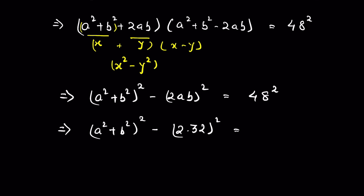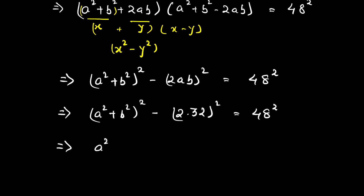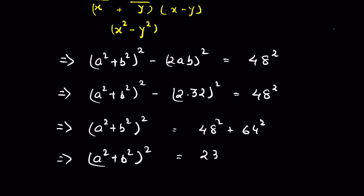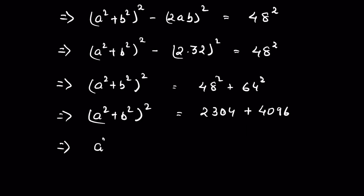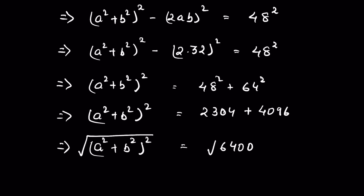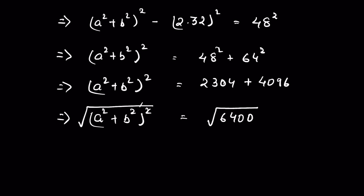From equation 4, ab equals 32, so 2ab equals 64. Substituting: (a²+b²)² minus 64² equals 48². Therefore (a²+b²)² equals 48² plus 64², which is 2304 plus 4096, giving 6400. Taking the square root of both sides, a²+b² equals plus or minus 80.